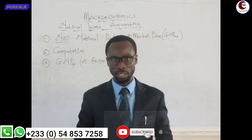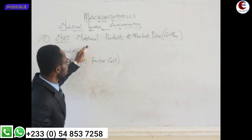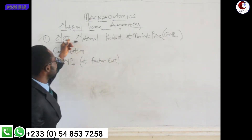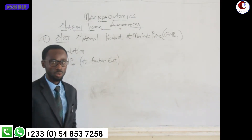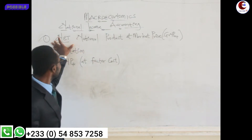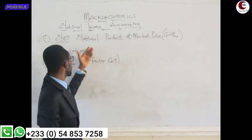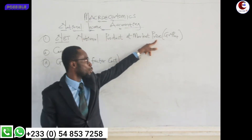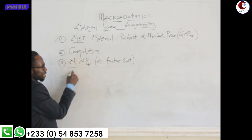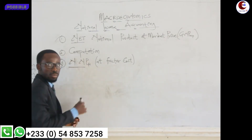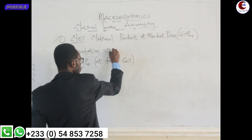Today we are going to look at the net national product at market price. The net national product is the national income — that's the actual income — which we convert to market price. We are going to look at the computation of the net national product at market price, and then the net national product at factor cost.